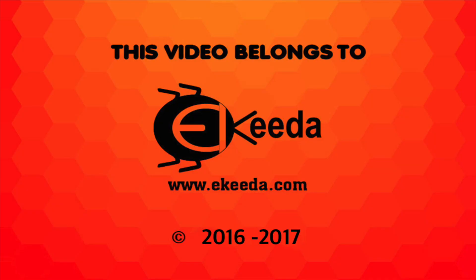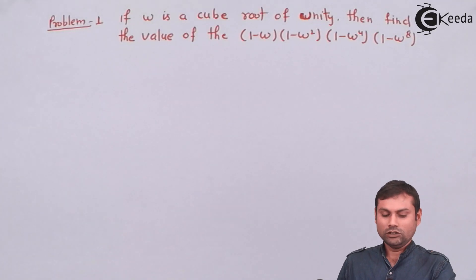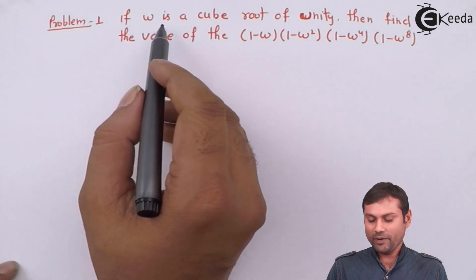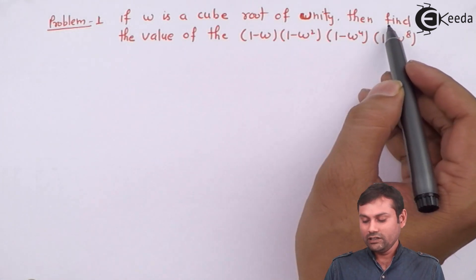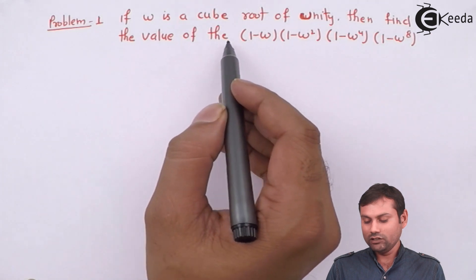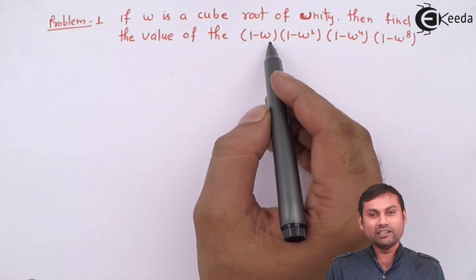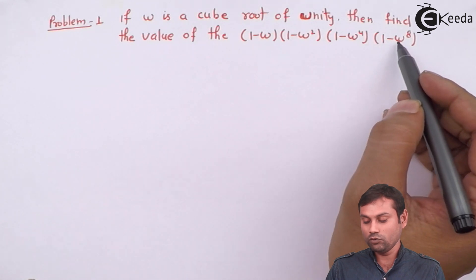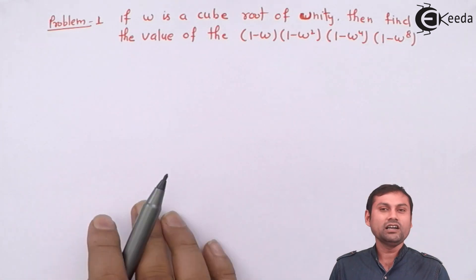Hello guys. In this video, I will show you a problem solved with the cube root of unity. The question is: if omega is a cube root of unity, then find the value of (1-omega)(1-omega squared)(1-omega to the power 4)(1-omega to the power 8).